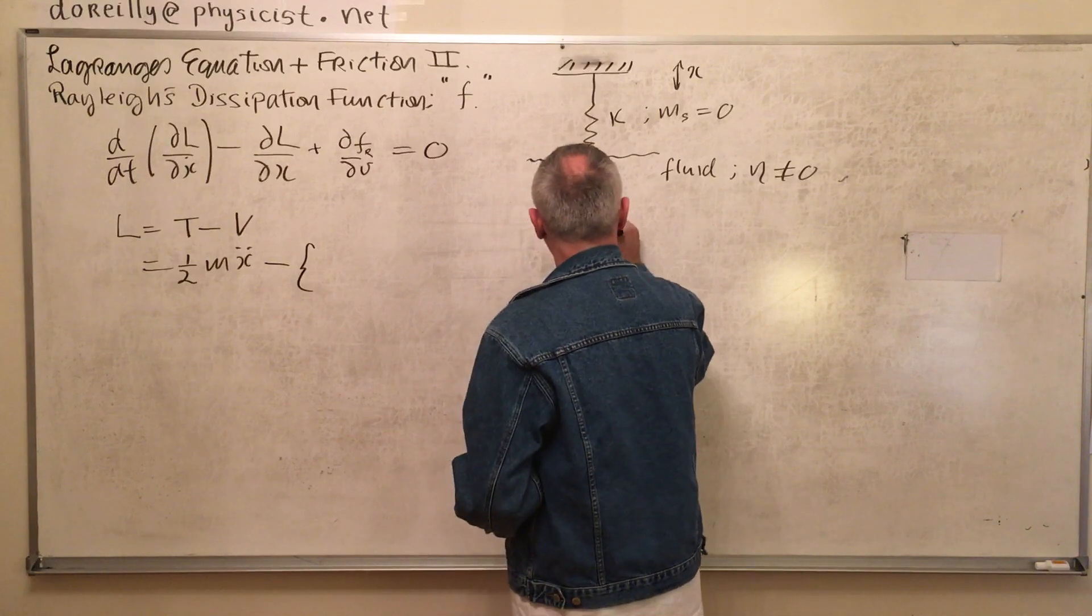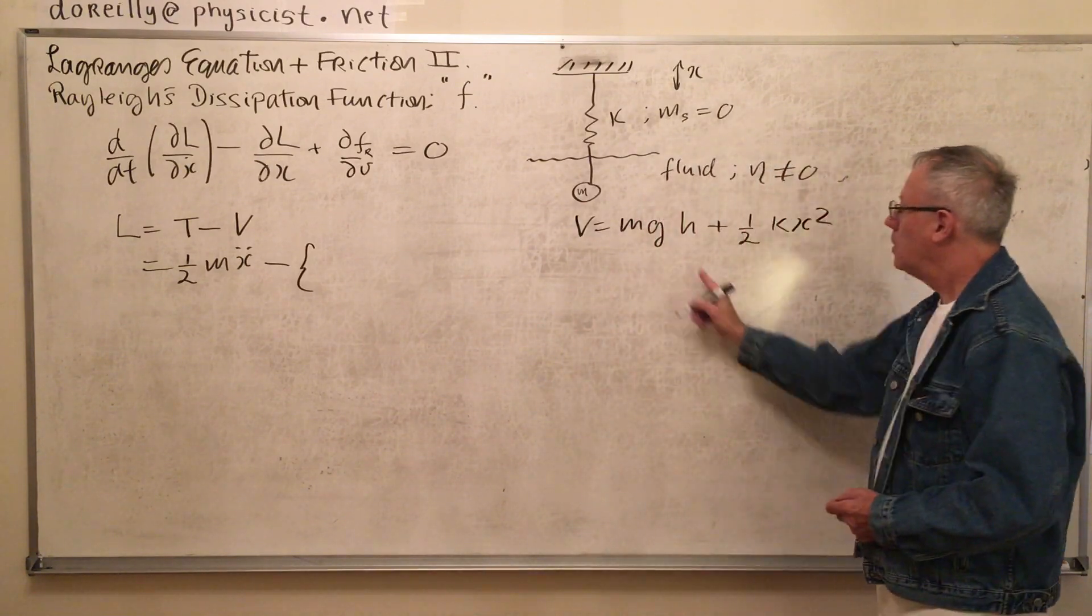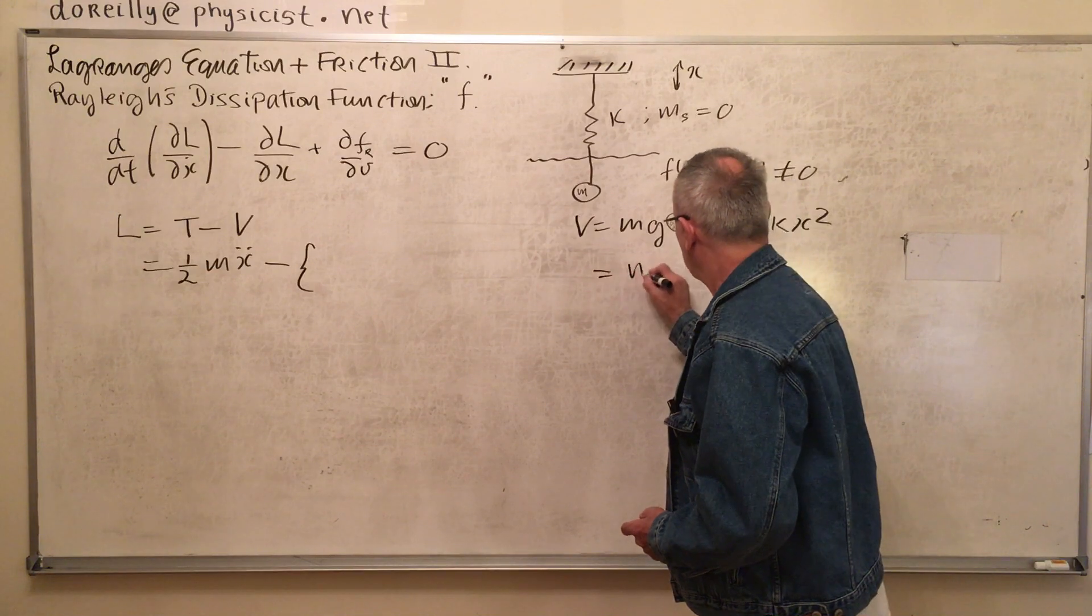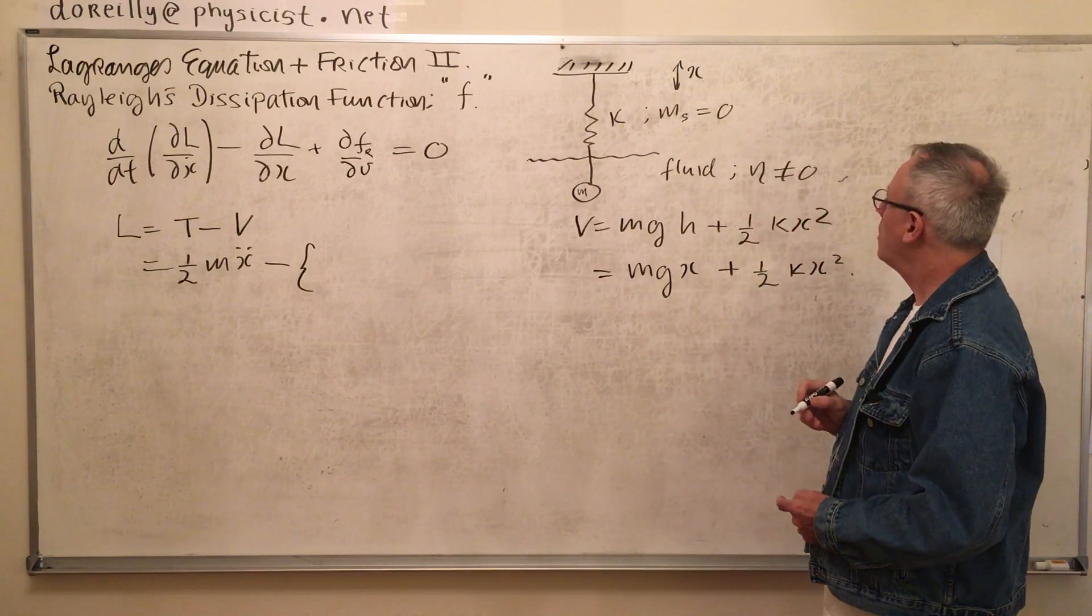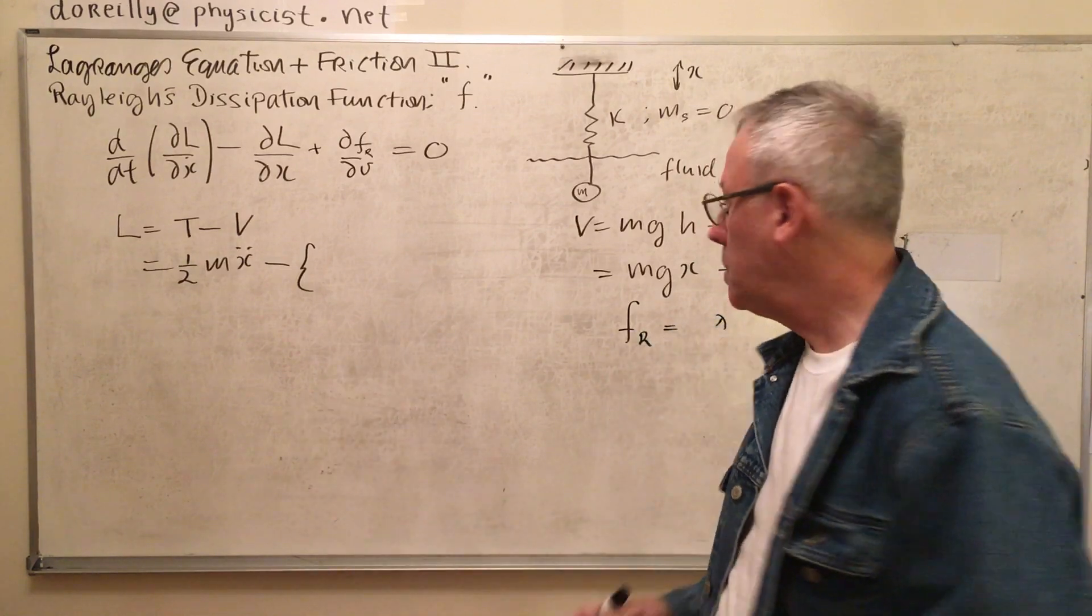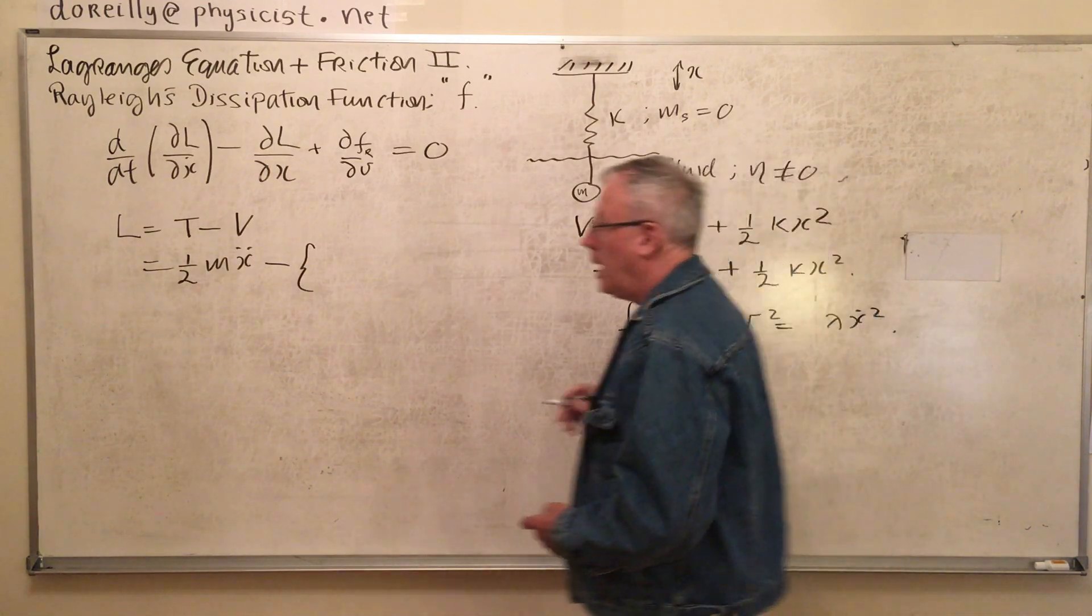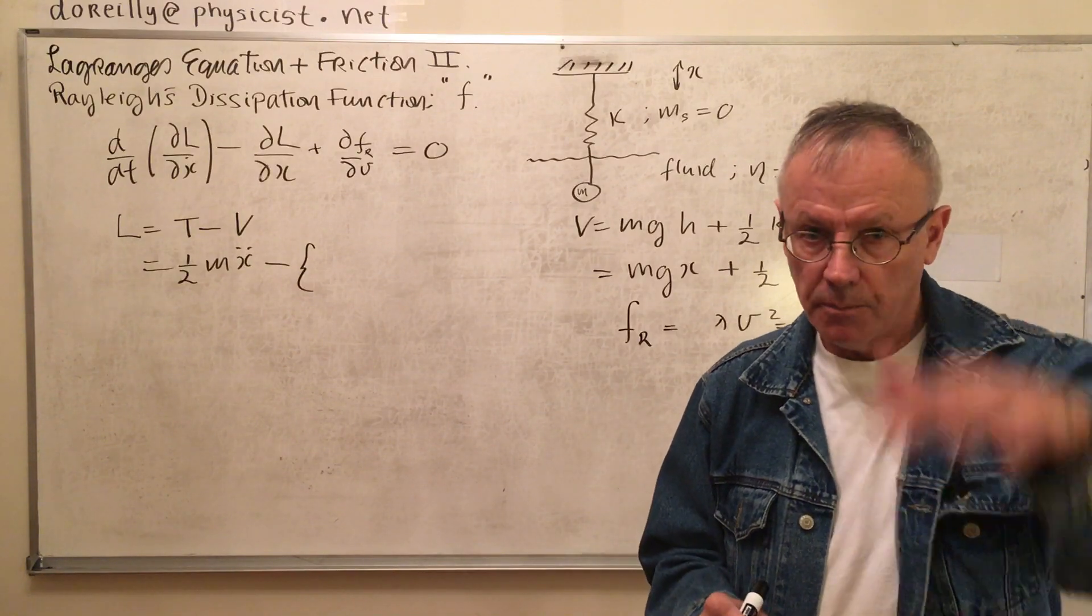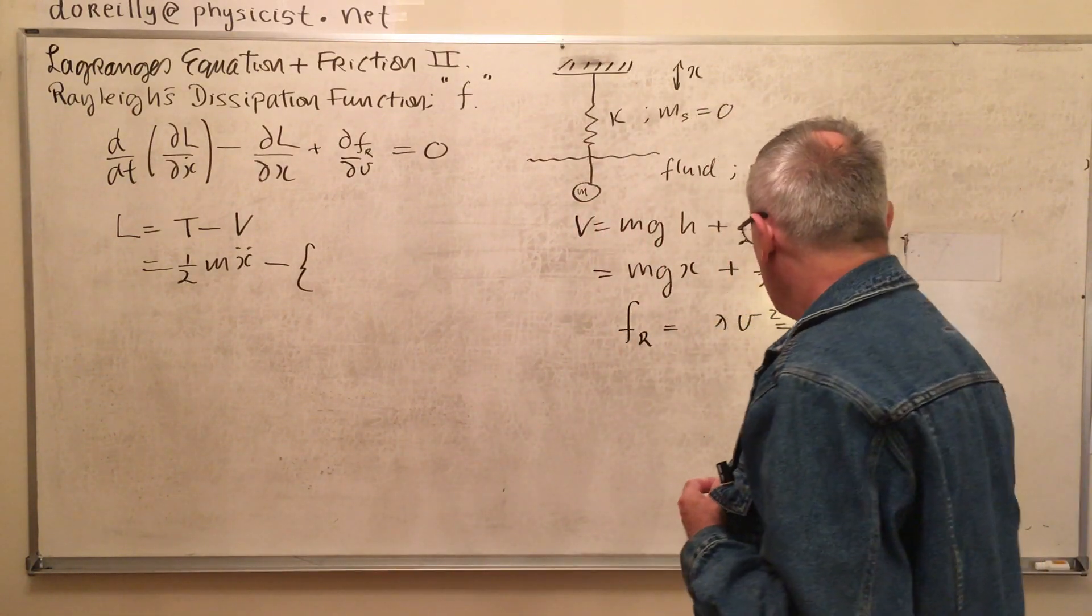So we need to set up our Lagrangian. So what is the V? Well, there's going to be a contribution due to the gravity and a contribution due to the spring. H is x. And I get a half k x squared. Now what's our Rayleigh dissipation function? Well, I said there are several terms in it, but I just made them all into a constant. And the V is going to be squared in this case because we're going to expect a linear relationship between the viscosity damping and the velocity. In other words, the faster the mass is moving, the greater the damping. So I put in for the V.